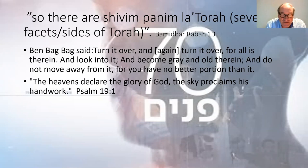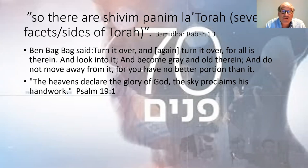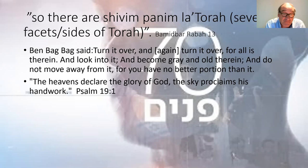Two examples. In Psalms 19 we read, 'The heavens declare the glory of God and the skies proclaim his handiwork.' If we read it literally, the heavens are speaking. It's much easier to say we see the heavens, we see the beauty, we see the wonderful elements of the world. There's a wonderful Jewish tradition that you wake up in the morning, open your window, look out, and say 'How great are your creations, O Lord.' But literally, of course, the heavens do not declare.